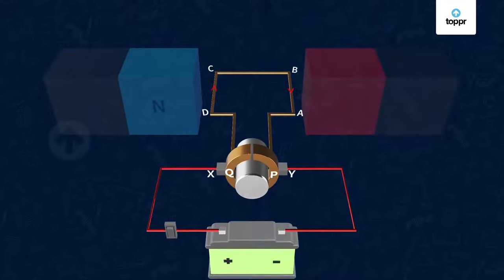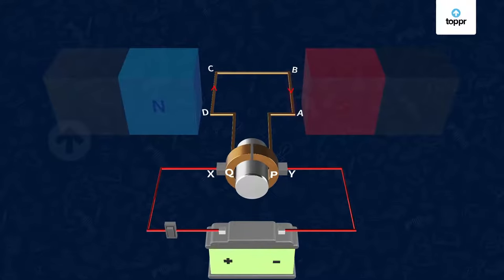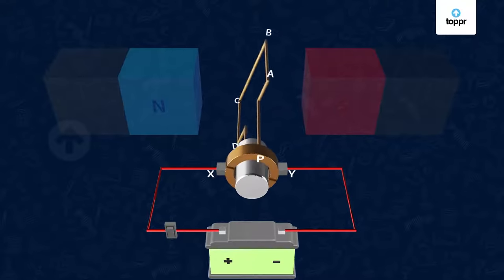You can again verify it using Fleming's left-hand rule. The arm AB of the coil that was pushed downward earlier is now pushed in the upward direction. And the arm CD pushed up earlier is now pushed down. Thus, the coil and axle makes the second half turn in the same direction.